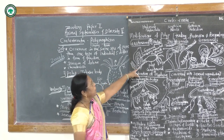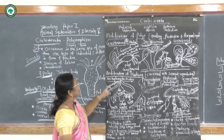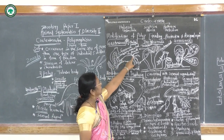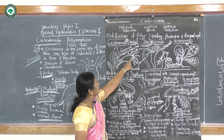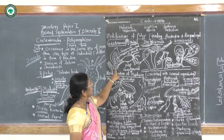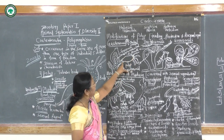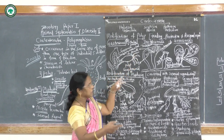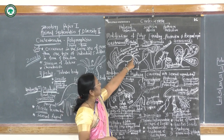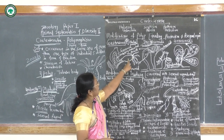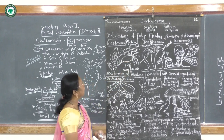Modification of polyp: the polyp mainly shows feeding, protection, and asexual reproduction. The mouth surrounded by tentacles represents the polyp stage attached to the colony. In the Obelia colony, the feeding polyp uses mouth and tentacles to collect food from the surrounding water and direct it toward the mouth, hence they are called gastrozoids or feeding polyp.